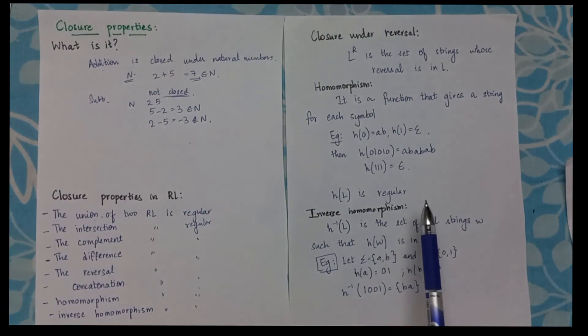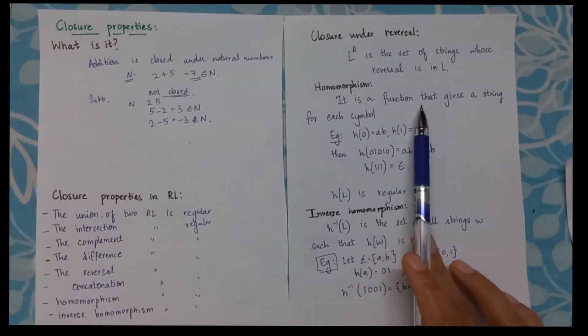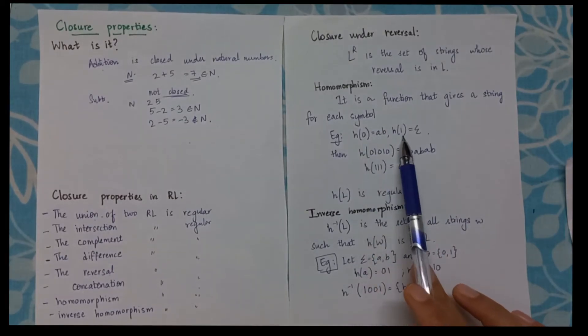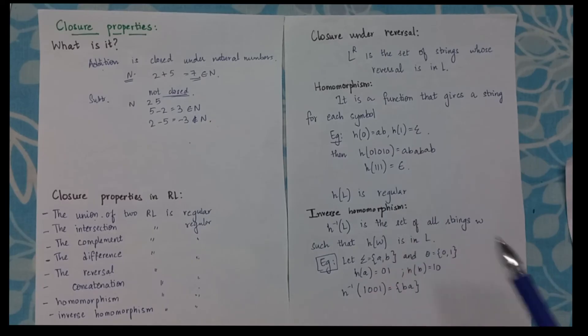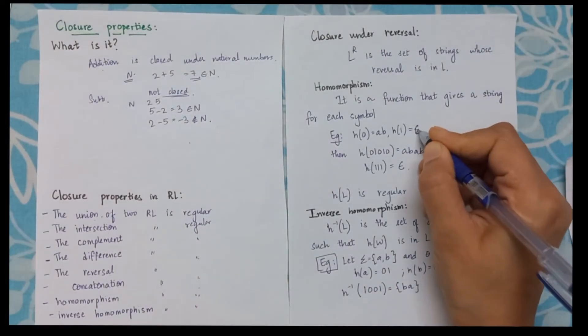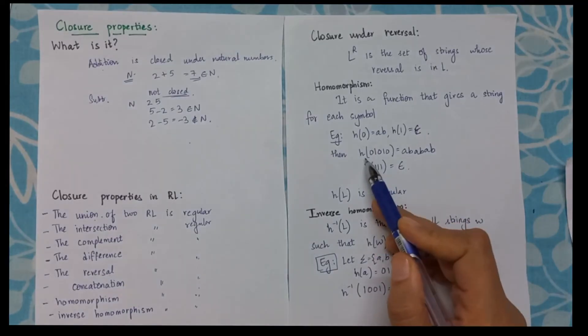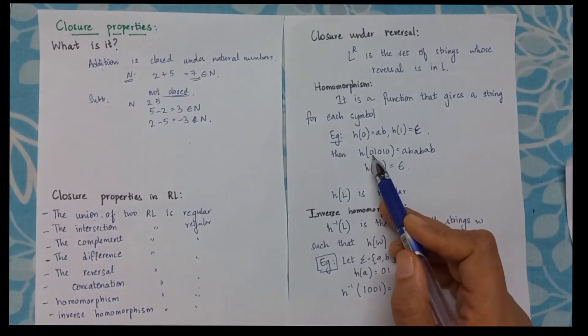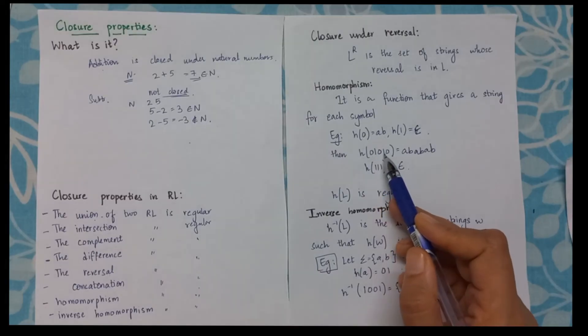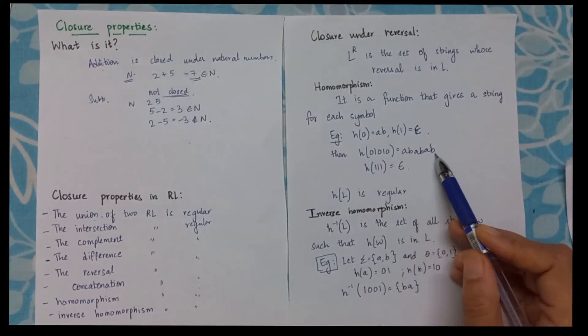Now what is homomorphism? Homomorphism means for every symbol that is there, I get some string. So here h(0) is giving me AB. h(1) is giving me ε. Now what will be h(0,1,0,1,0)? Now this will be AB, ε AB, ε AB. Can be written as AB, AB, AB.